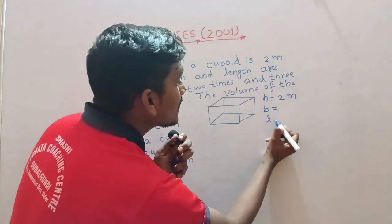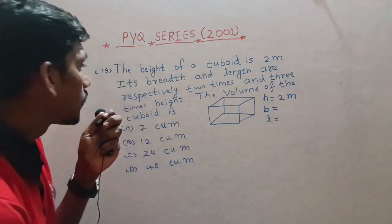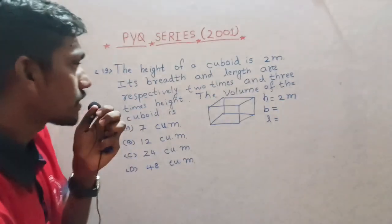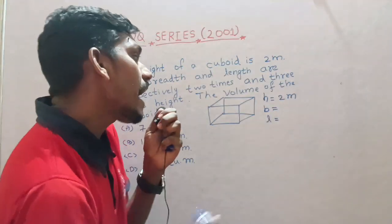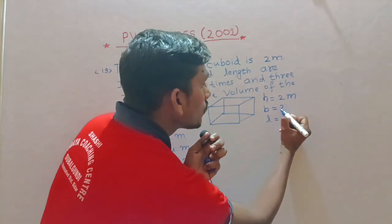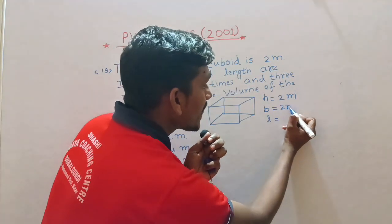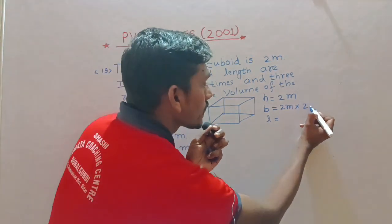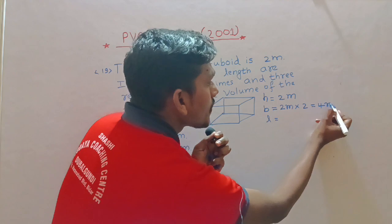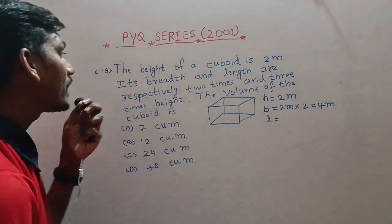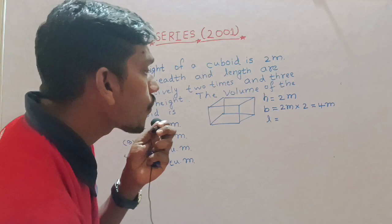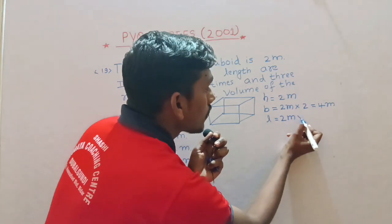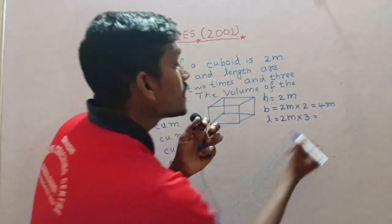Breadth and length are two times and three times height. Height is 2 meters. The breadth - the length - three times of height. Height is 2 meters, three times, multiply by 3. So 2 into 3 is 6 meters, the length.